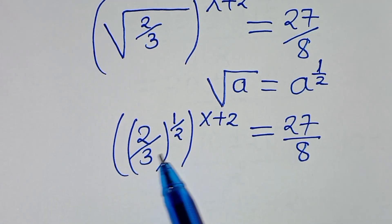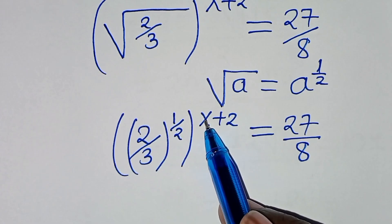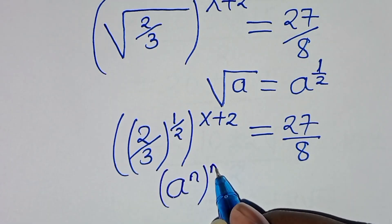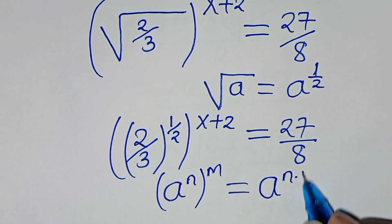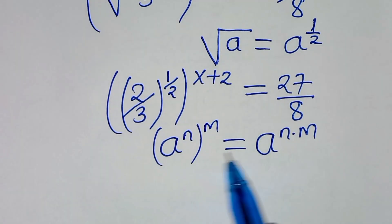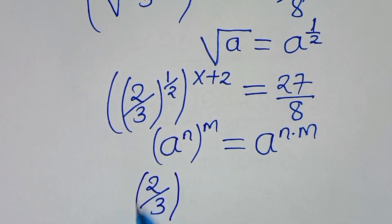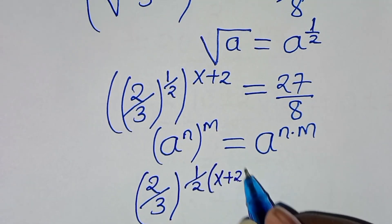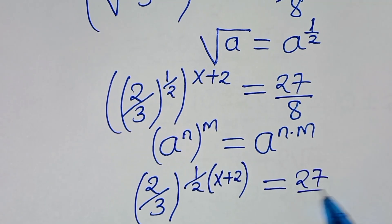The next step: we have 2 over 3 raised to the power of one half, multiplied by x plus 2. This is in the form of a to the power of n, raised to the power of m, which we can express as a to the power of n times m. Applying this exponent property, we have 2 over 3 raised to the power of one half times (x plus 2), equal to 27 over 8.